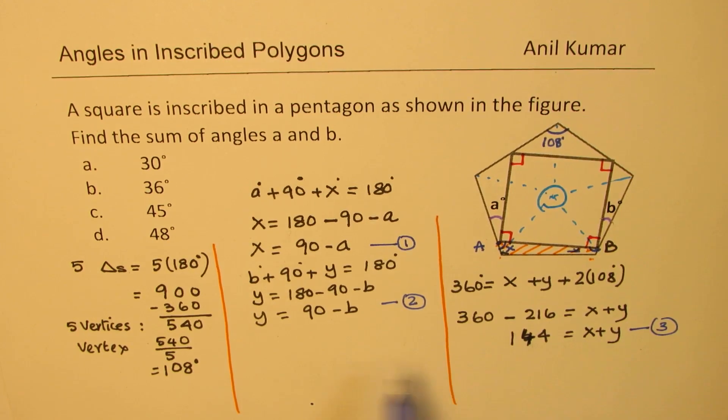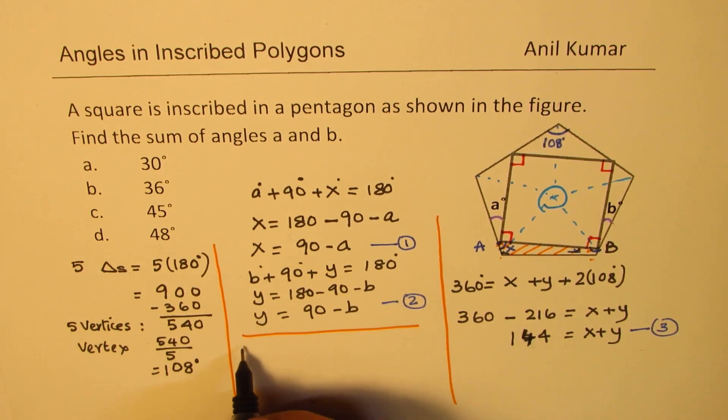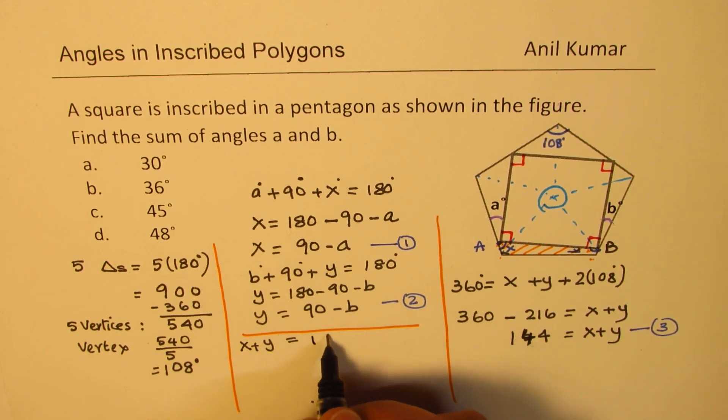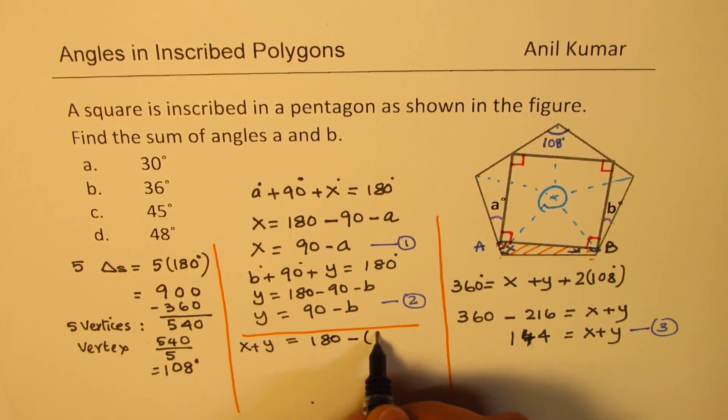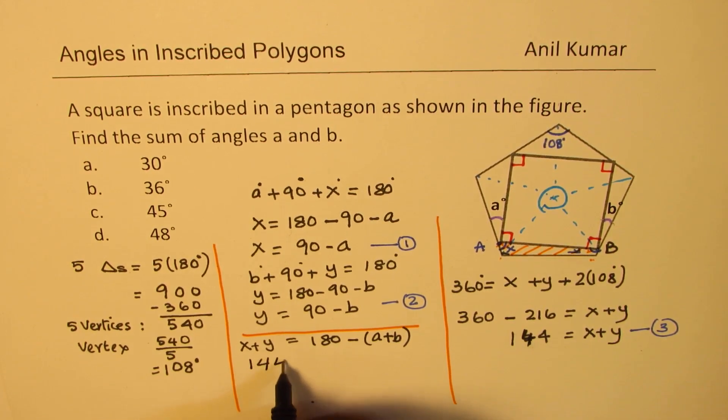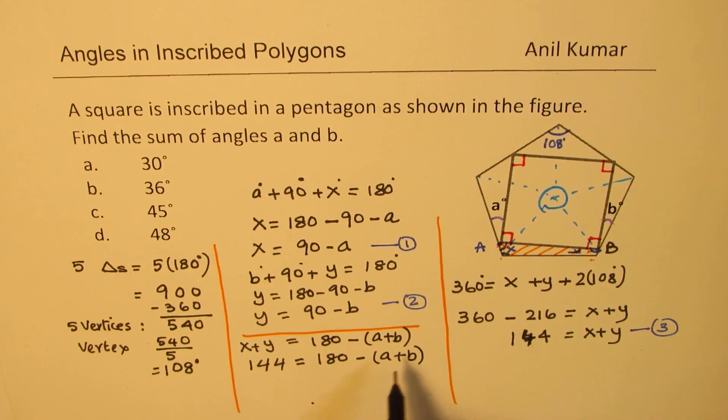Now X plus Y is 144. So we can now add this up. When we add X and Y, we get X plus Y equals adding 90, 90, we get 180 minus A plus B. X plus Y is 144. So we will replace this with 144, which equals 180 minus A plus B.